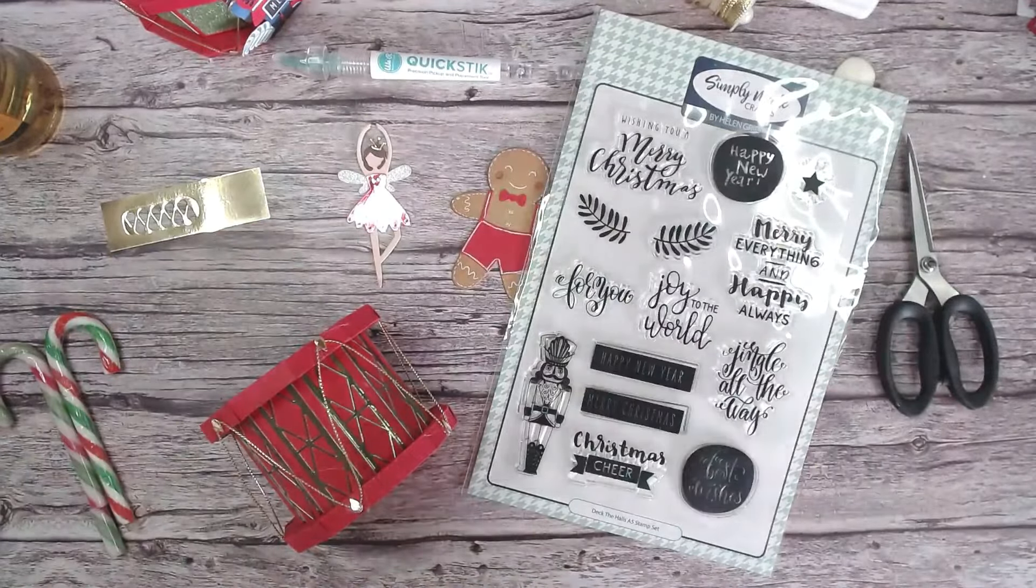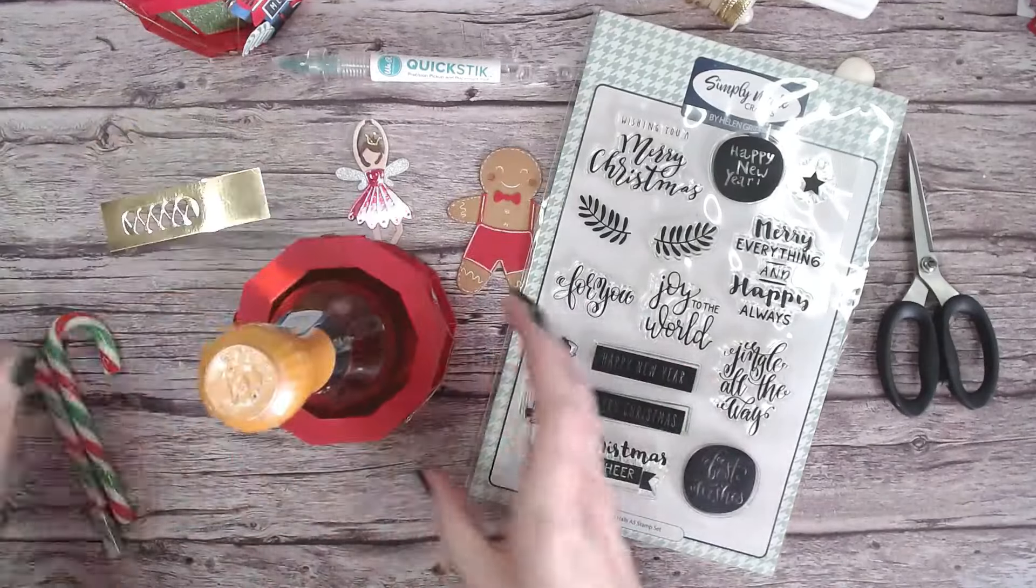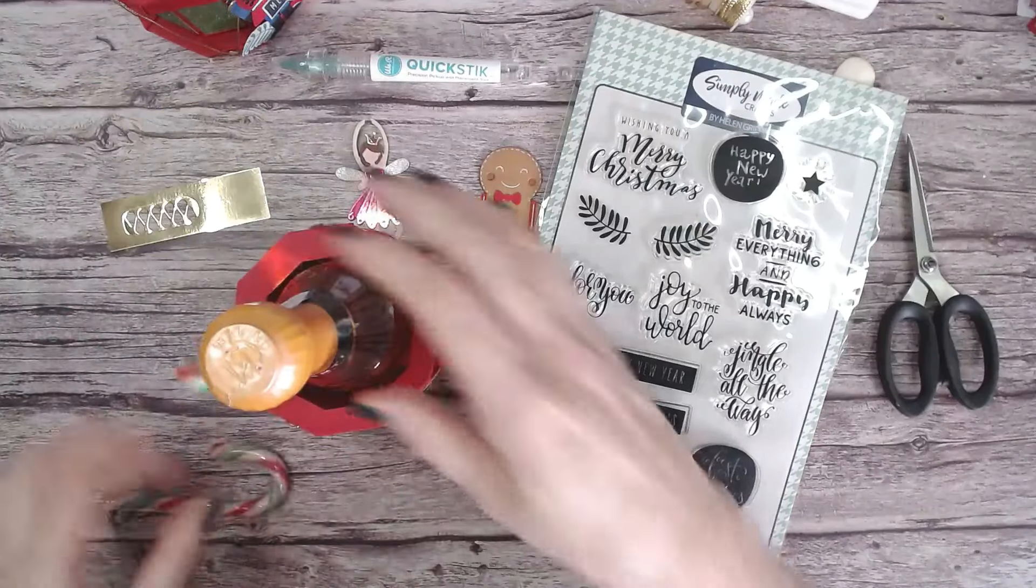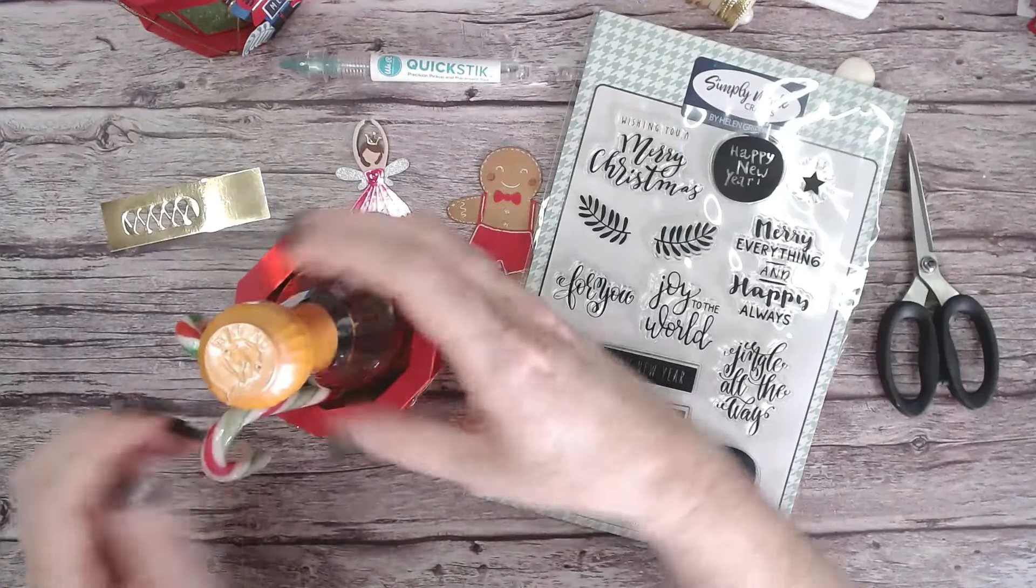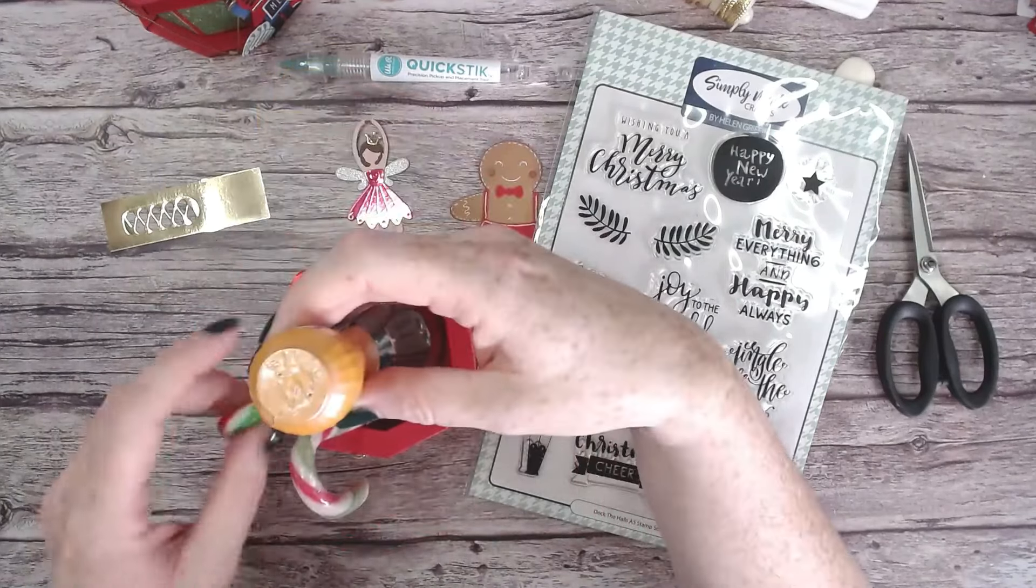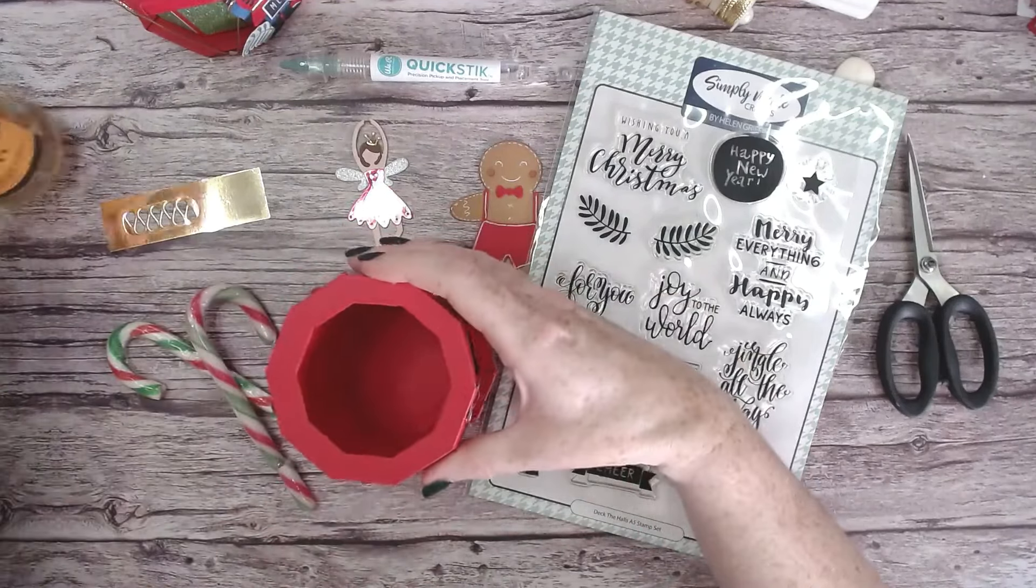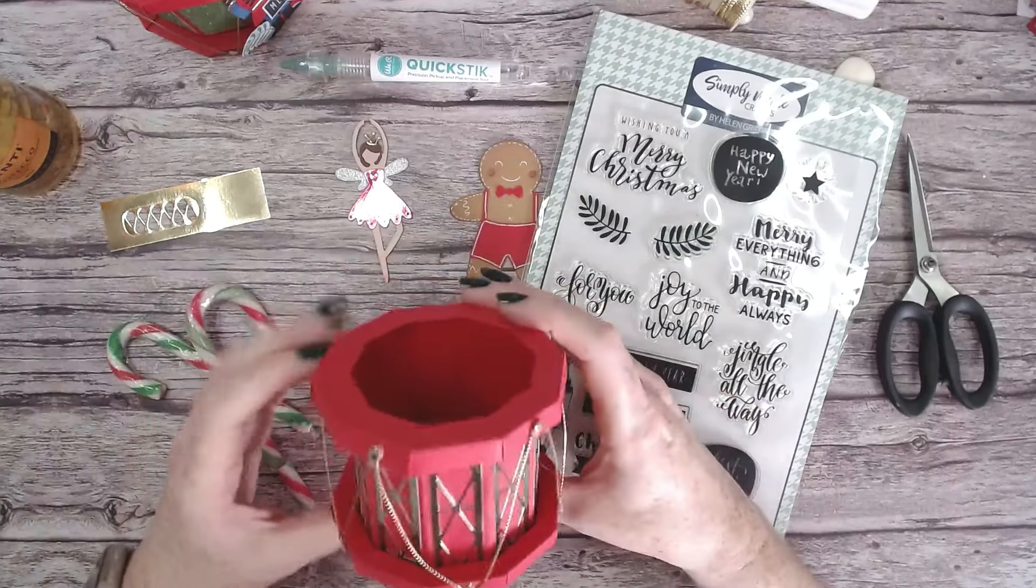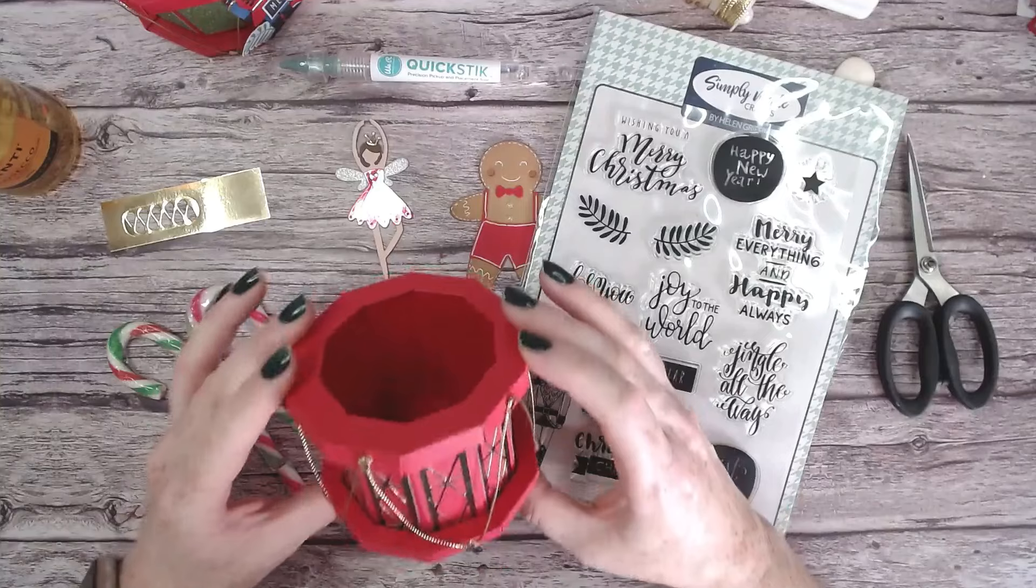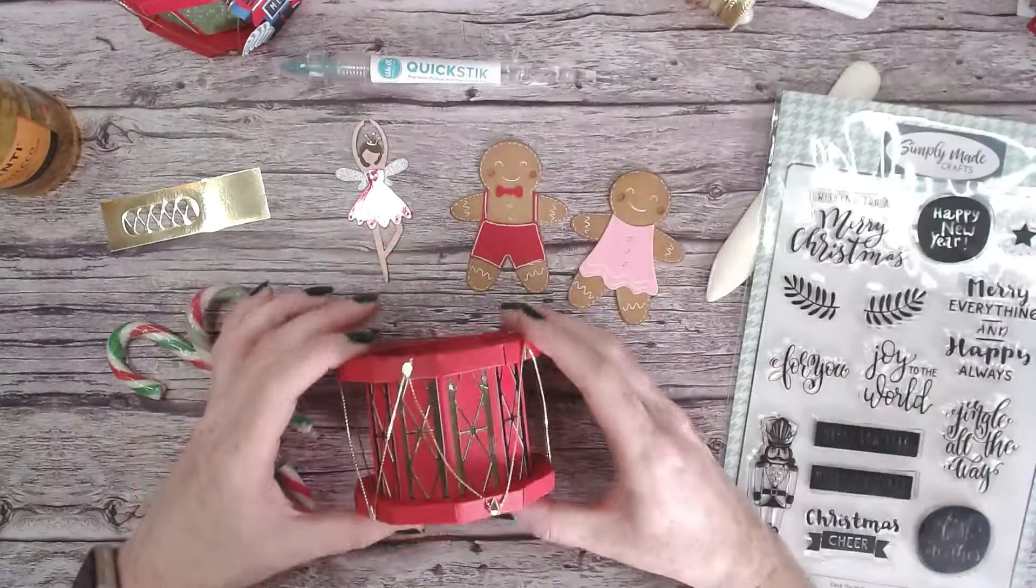So you can get really creative. This will also fit a bottle of wine in there too. You can pop in some candy canes in with that as well. So let me know in the comments what you would put in your little mini drum. I think a hot chocolate gift set would be also really nice too to give as a gift. So if you love this new collection, Deck the Halls, do check out the rest of the collection.